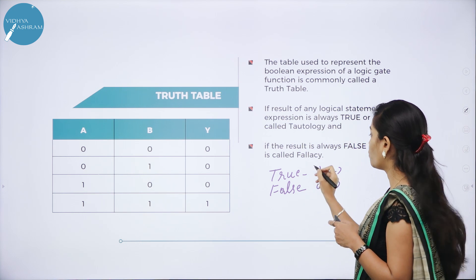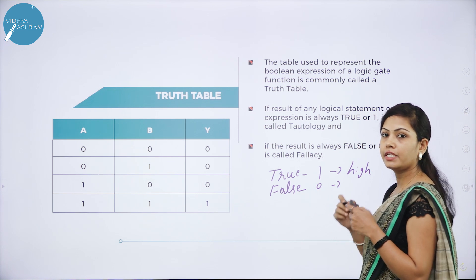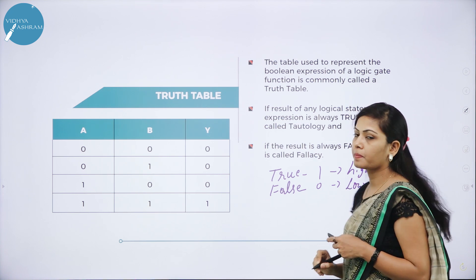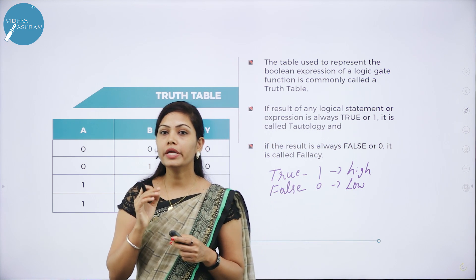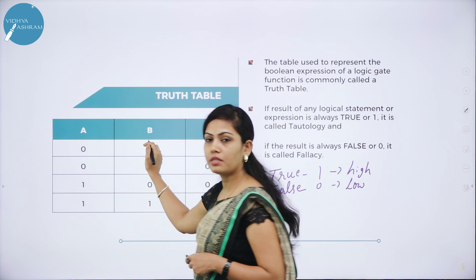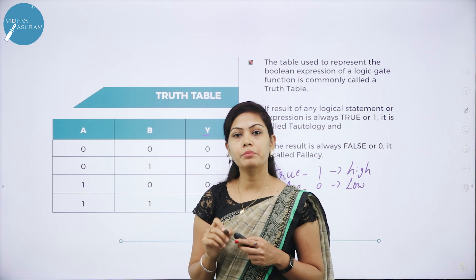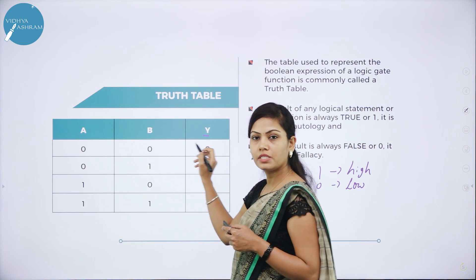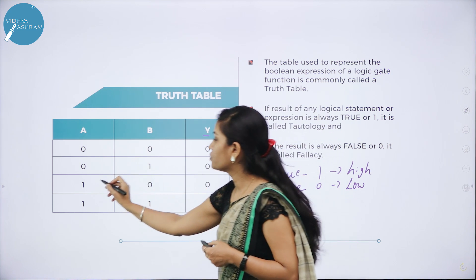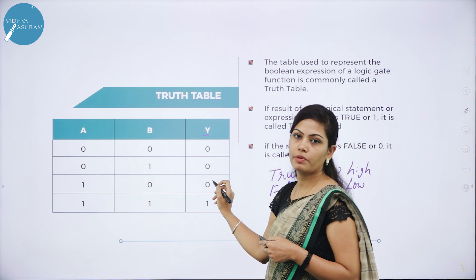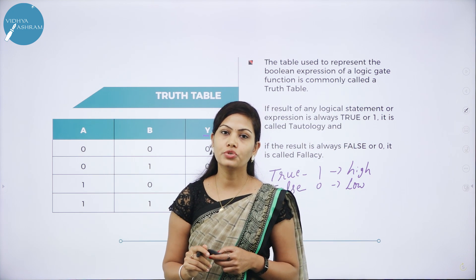Let us elaborate this. 1 means the condition is high and 0 means the condition is low. For example, if A and B are the logical statements and Y is the result, then the Truth Table can be written as: false AND false equals false; false AND true equals false; true AND false equals false; and true AND true equals true.